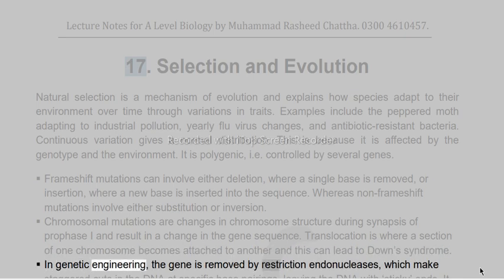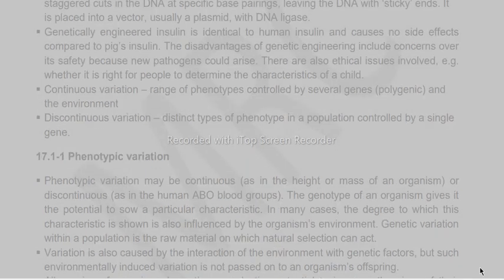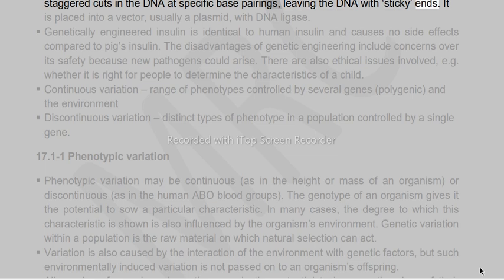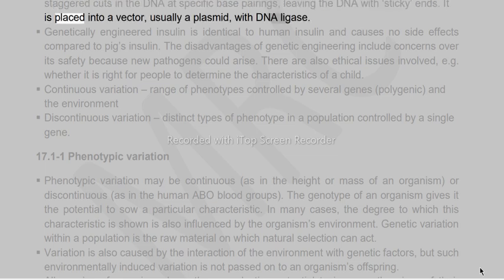In genetic engineering, the gene is removed by restriction endonuclease, which makes staggered cuts in the DNA at specific base pairings, leaving the DNA with sticky ends. It is then placed into a vector, usually a plasmid, with DNA ligase.